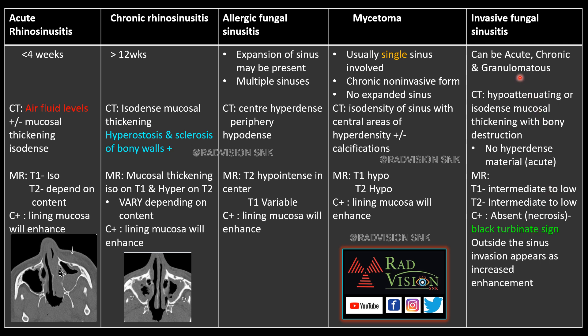Invasive fungal sinusitis can be acute, chronic, and granulomatous. On CT, hypo-attenuating or isodense mucosal thickening is seen with bony destruction; no hyperdensity is seen in the acute phase. T1 and T2 show intermediate to low signal intensity, and since it is the invasive form, the adjacent invaded structures show enhancement.